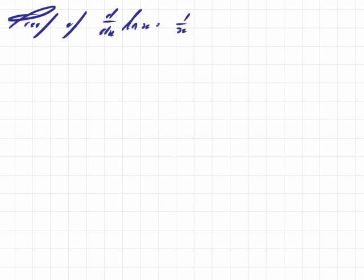In this short video we're going to look at the proof of the fact that the first derivative of the natural log of x equals 1 over x. It's one of those proofs in mathematics that really doesn't come naturally and doesn't sit well. There's one expression we need to know beforehand, and that is the definition of Euler's number: the limit as n goes to infinity of 1 plus 1 over n to the power n.